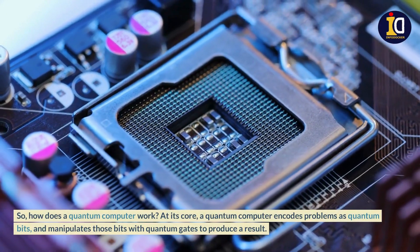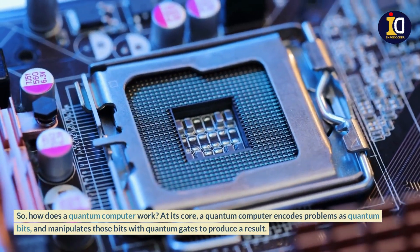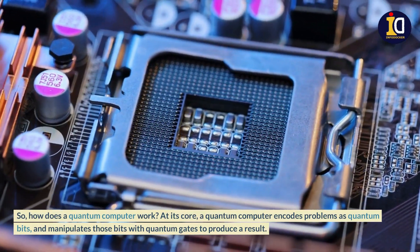So, how does a quantum computer work? At its core, a quantum computer encodes problems as quantum bits and manipulates those bits with quantum gates to produce a result.